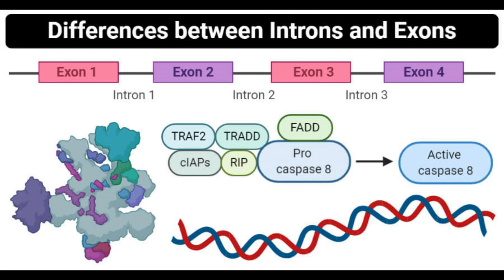By presence: introns are present in the DNA and mRNA transcripts but are not present in mature mRNA, while exons are present in DNA, mRNA transcripts, and mature RNA. By conservation: the sequences in introns are not as conserved as the sequences of exons; some introns might convert into exons by the process of exonization. The sequences in exons are highly conserved.